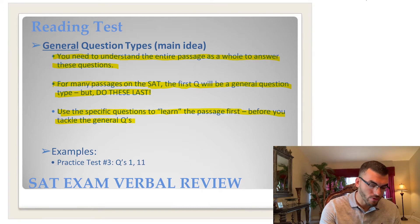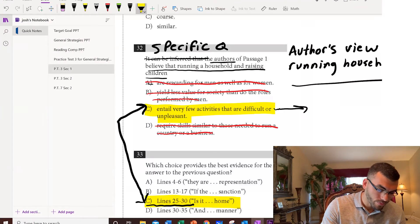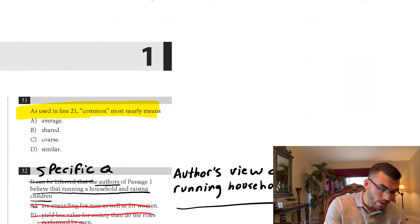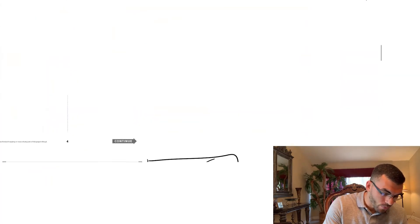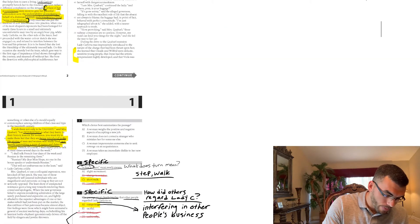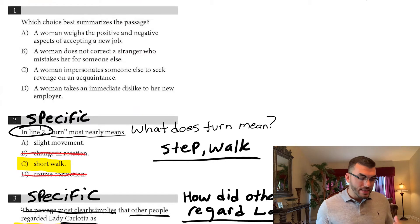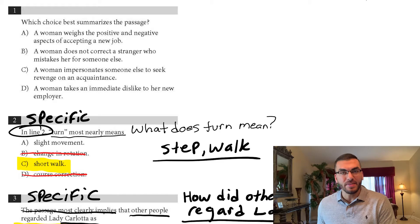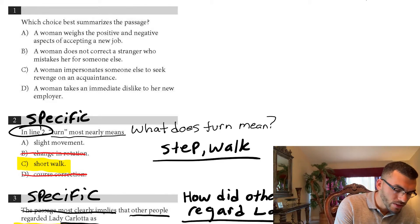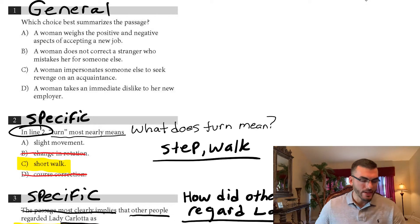So let's look at two general questions briefly to give an example. We're going to look at question number one on practice test three. Which choice best summarizes the passage? That's the first question for this passage, question number one. And clearly you do need to understand the entire passage to know how to best summarize the passage. So the answer is not really going to be found so much in one specific part of the passage. You are going to have to understand the entire passage.